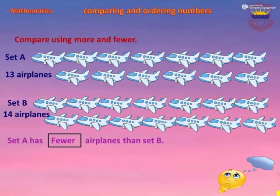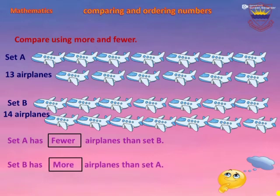Set A has fewer airplanes than Set B. Set B has more airplanes than Set A. Set A has 13 airplanes and Set B has 14 airplanes.